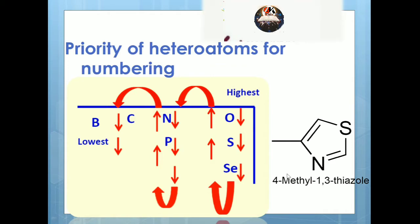What if there is more than one different heteroatom — for example, a structure having one sulfur and one nitrogen? We must determine which atom gets highest priority. The rule is: oxygen has highest priority, then sulfur, then nitrogen, then carbon. So for a ring having one sulfur and one nitrogen, sulfur is highest priority and gets position 1, nitrogen gets position 3. A substituted methyl at position 4 gives the name 4-methyl-1,3-thiazole.